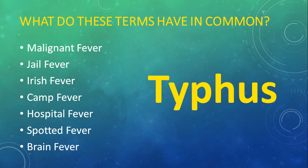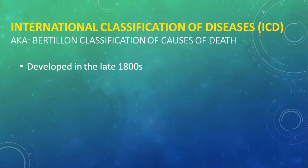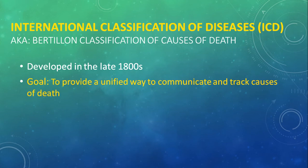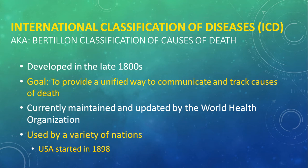As you can imagine, if different countries were calling it malignant fever or hospital fever, you wouldn't realize you were talking about the same disease. There had to be a way for everyone to use whatever term they wanted but still communicate the same language. The solution was to create an international classification system using numbers, which became the International Classification of Diseases (ICD), developed in the late 1800s. Its goal was to provide a unified way to communicate and track causes of death. It is currently maintained by the World Health Organization and used by a variety of nations. The US started using it in 1898.